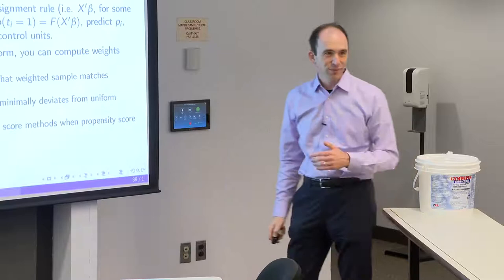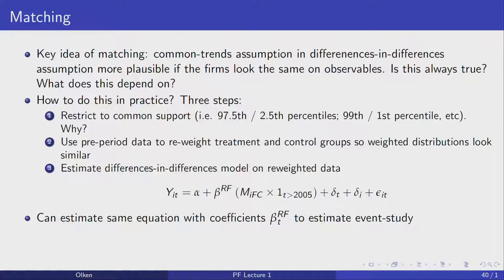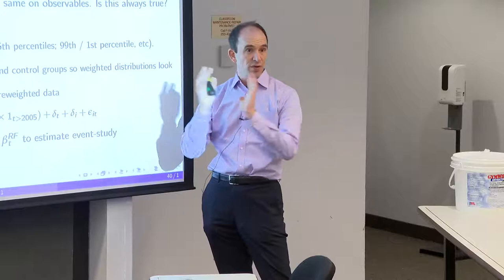So the steps are: first, common support; second, estimate propensity score and rebalance; third, estimate your difference-in-difference model on the reweighted data. Why bother with reweighting rather than just doing a regular difference-in-difference? Because these different groups might be on different trends, and you really want comparable to comparable to make sure you're balancing the trend properly.